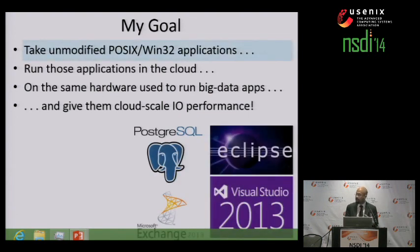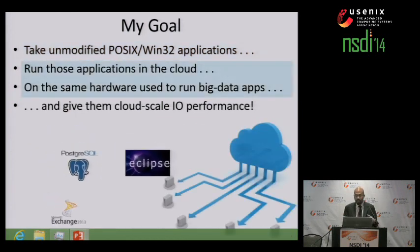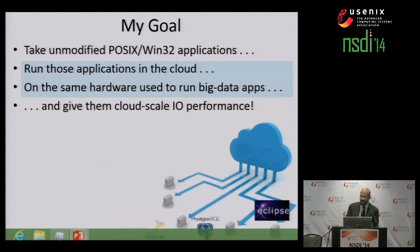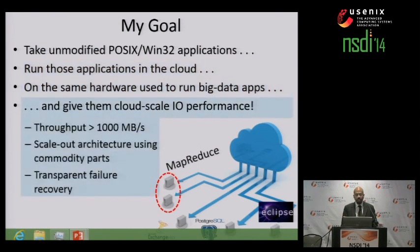First, I want to take some unmodified POSIX applications and Win32 applications that are IO intensive — things like the Postgres database, an Exchange email server, or compilation tools like Eclipse or Visual Studio. Then I want to deploy those applications in the cloud to the same machines that run big data applications like MapReduce. And once those POSIX and Win32 applications are running, I want them to receive cloud-scale IO performance.